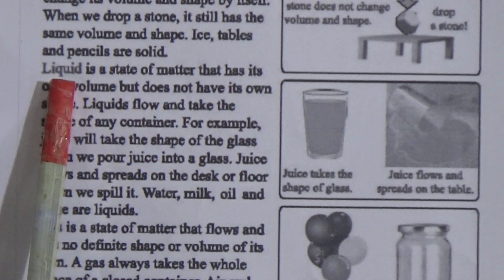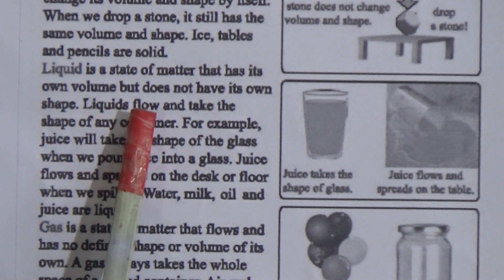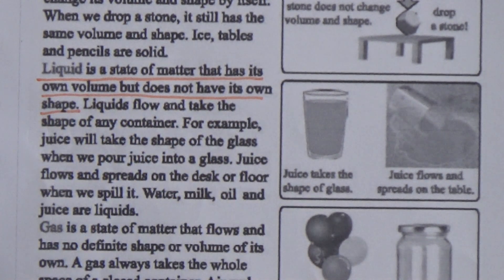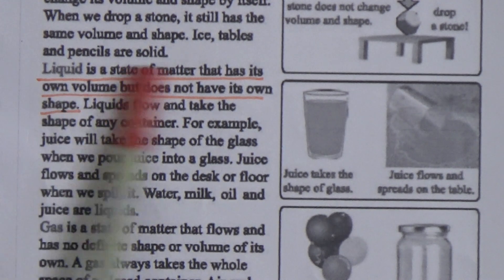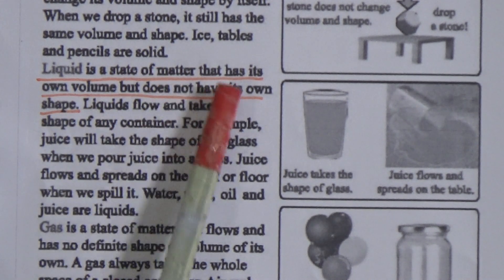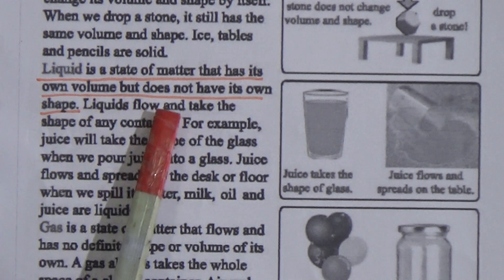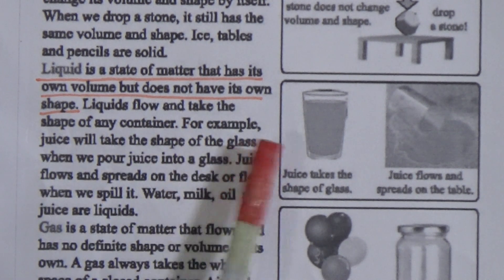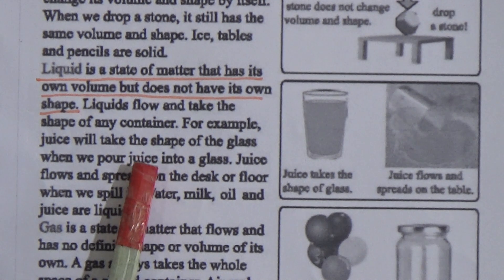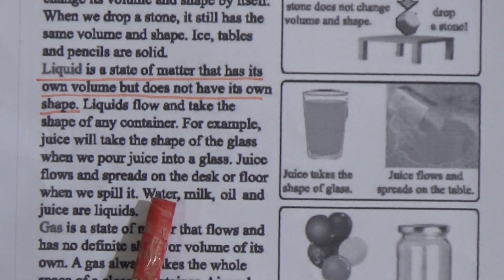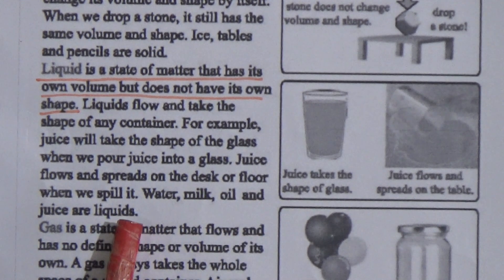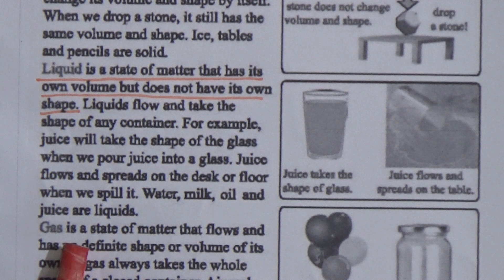Liquid is a state of matter that has its own volume but does not have its own shape. Underline this — these are the properties of liquid. Liquids flow and take the shape of any container. For example, juice takes the shape of the glass when poured into it. Juice flows and spreads on the desk or floor when spilled. Water, milk, oil, and juice are liquids.